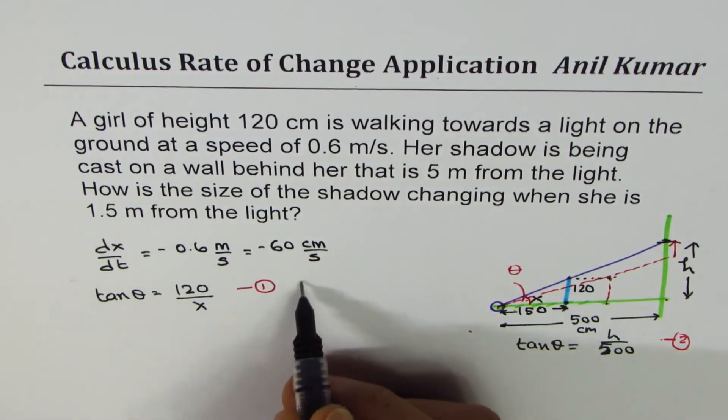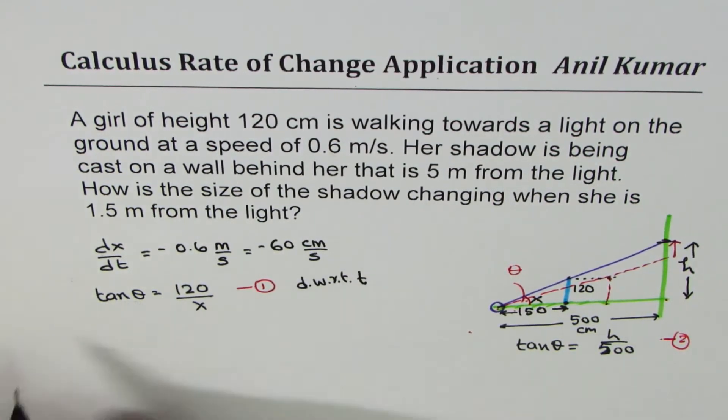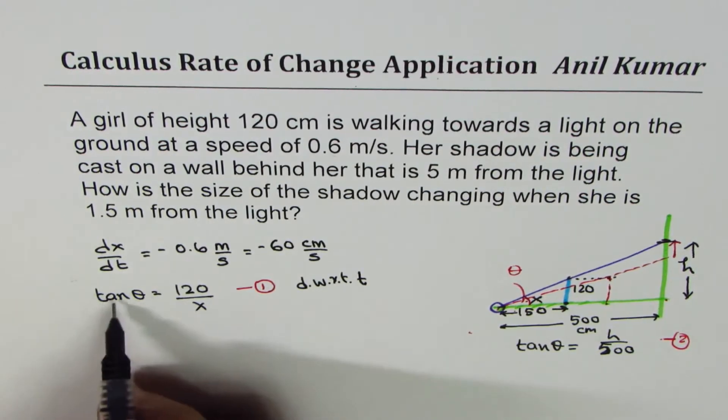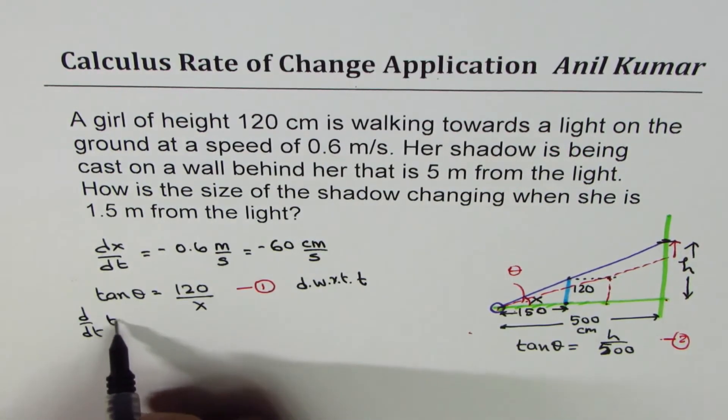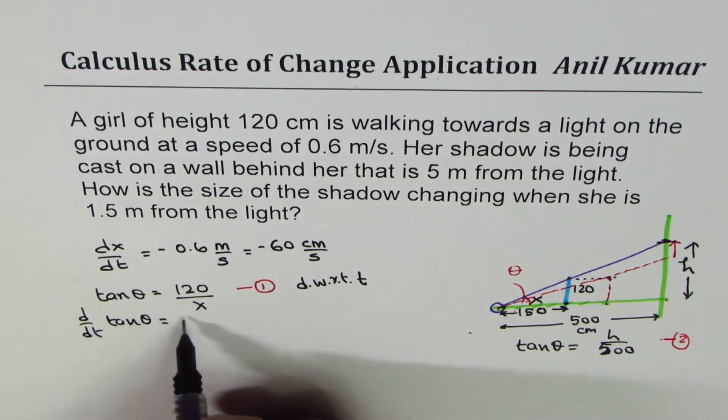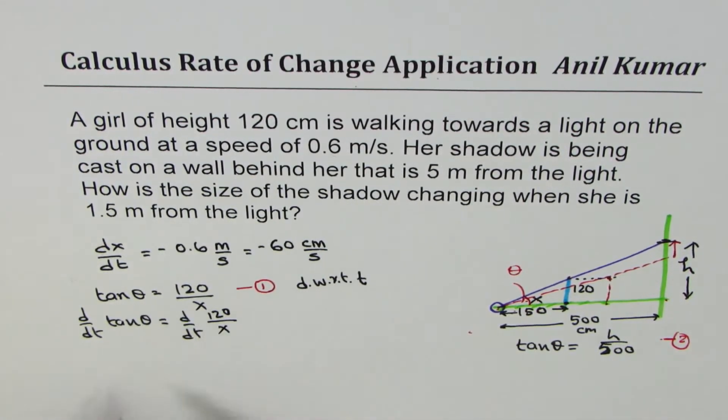Let's continue. So if I differentiate with respect to time, then what do I get? So I get derivative of tan theta. So we are doing d/dt of tan theta and d/dt of 120 over x. Now, derivative of tan theta is secant square theta. You just have to remember that. Now, since theta is another variable, we'll apply the chain rule. So we get d theta/dt.